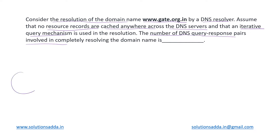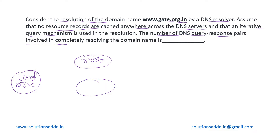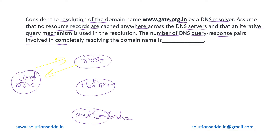In the iterative mechanism, we have the local DNS server from where requests are sent to the root server, followed by the top-level domain (TLD) server, and finally the authoritative server. These three steps completely resolve the domain name. Requests travel from the local server to the root and back, following the iterative approach — unlike recursive, which is different.